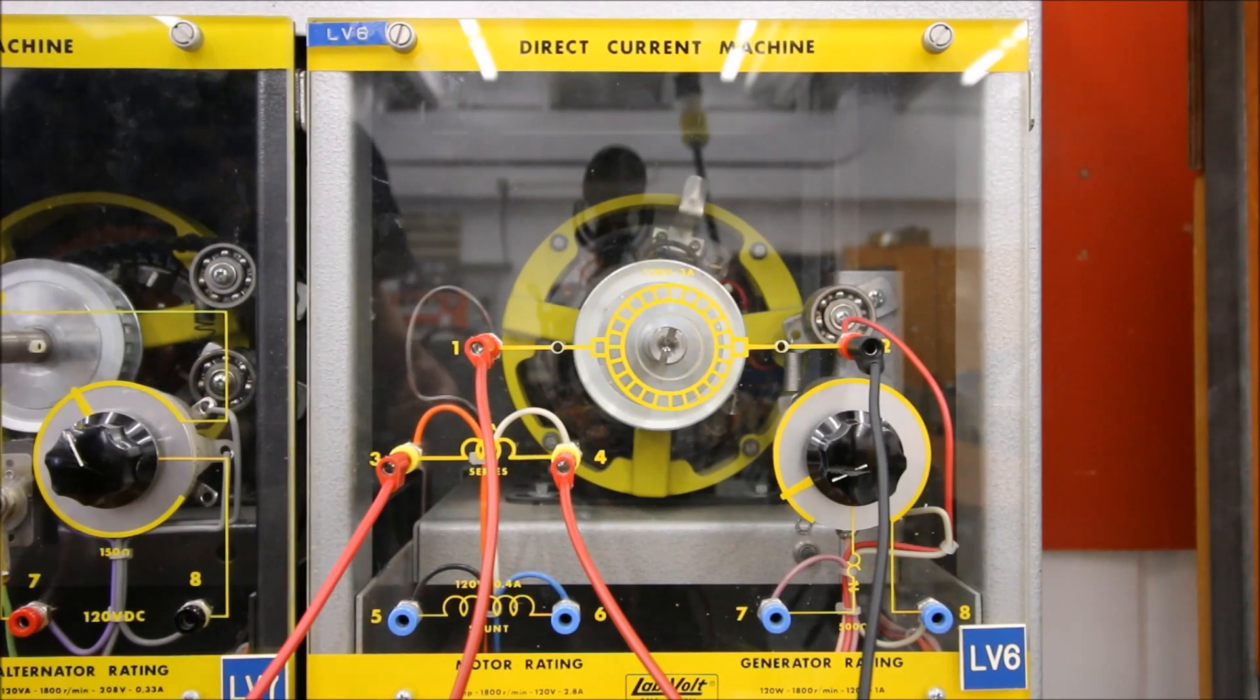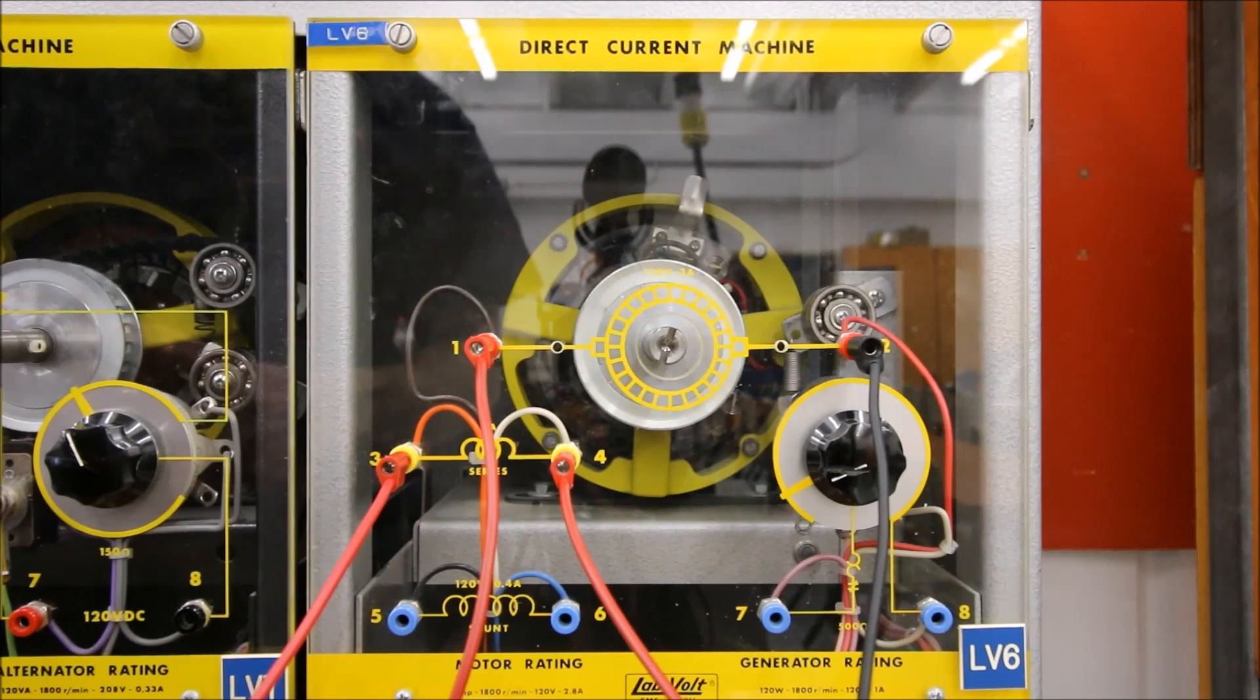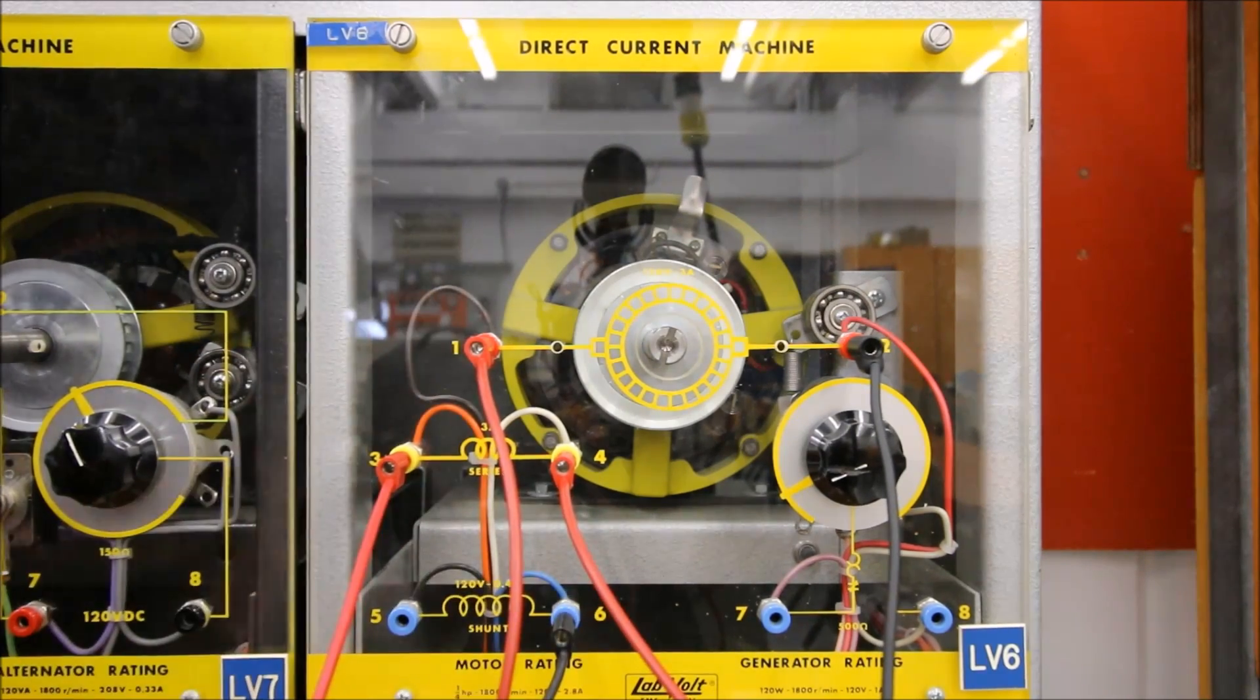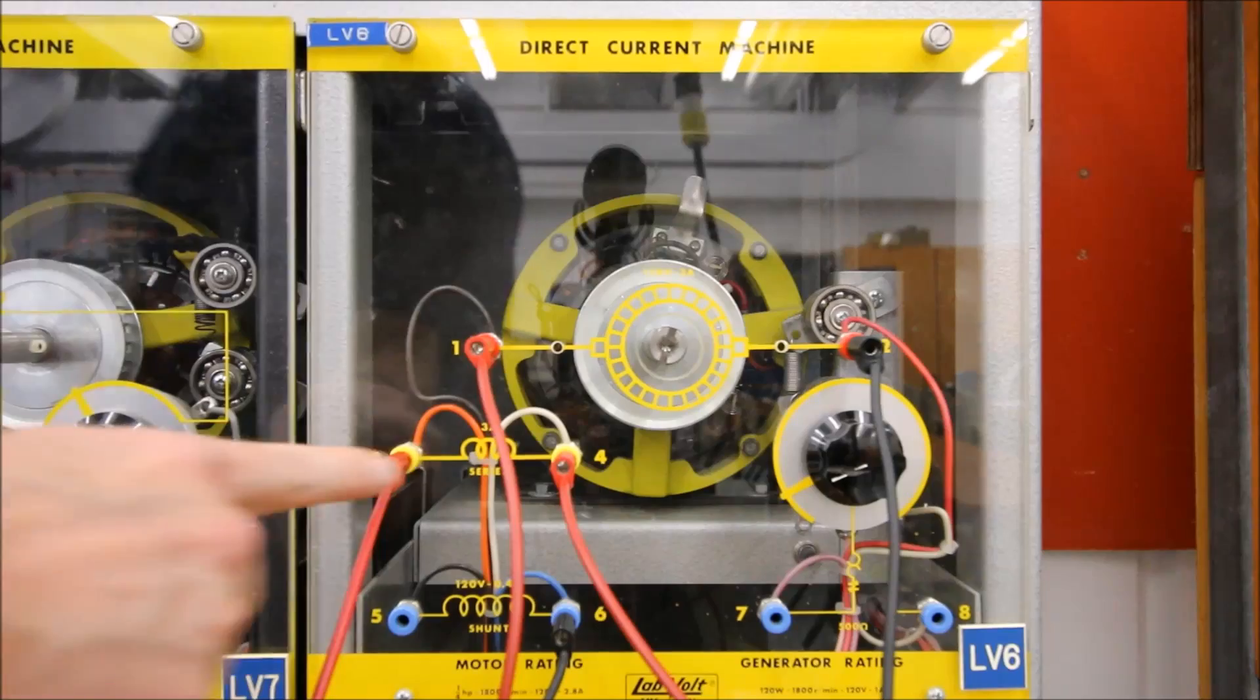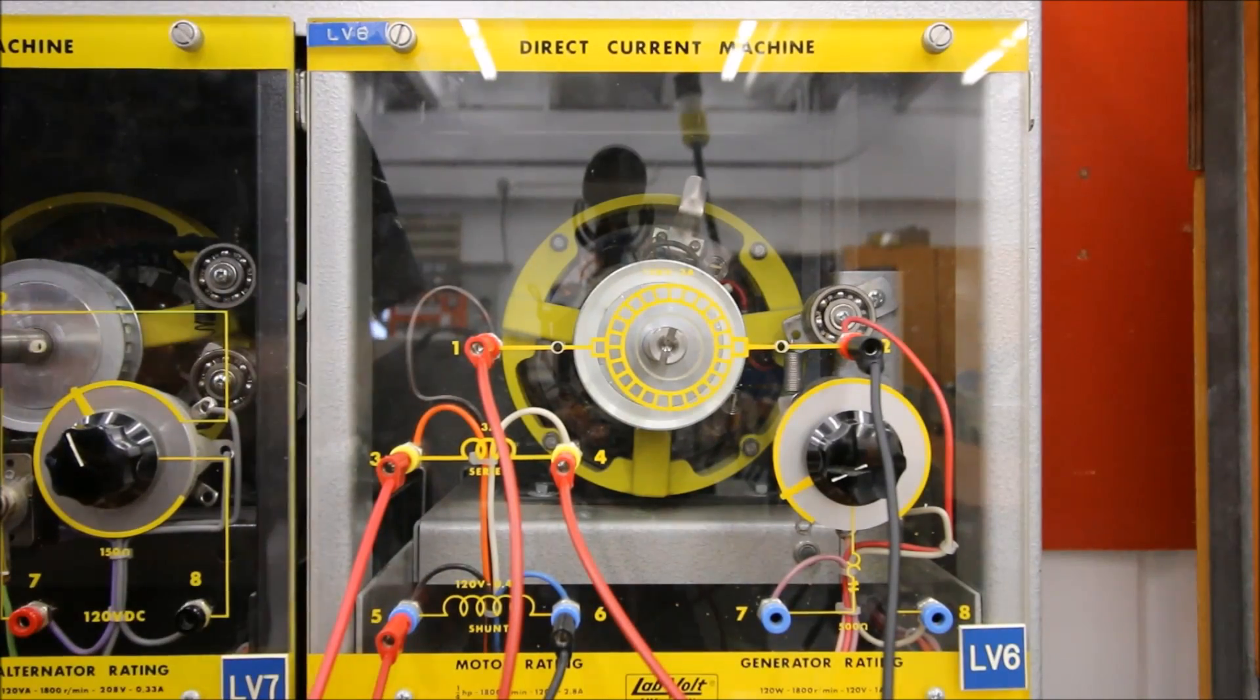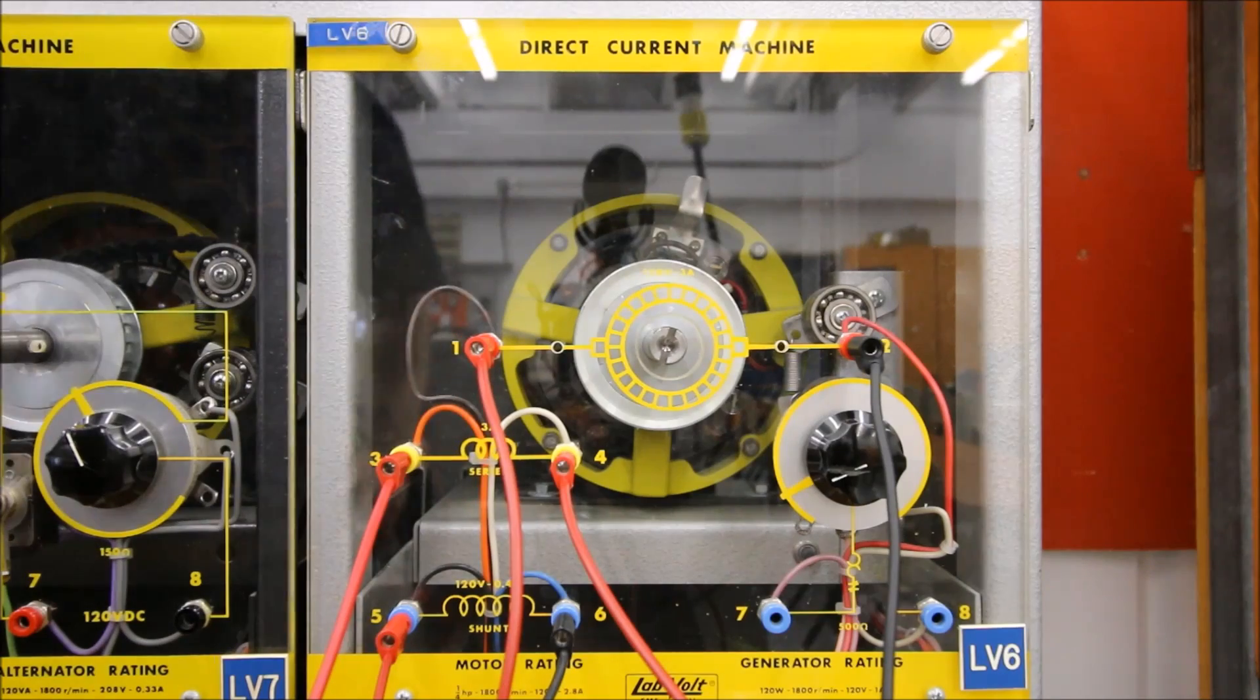In addition to that, we're going to have the shunt in parallel with both the series and the armature. So the shunt is essentially going to be right across the source. F2 is going to go to my negative, and because I've put S1 to the positive, you can see S1 is to the positive, then F1 is also going to go to the positive. That's crucial for a cumulative compound motor. Let's take a look and see how this guy sounds.